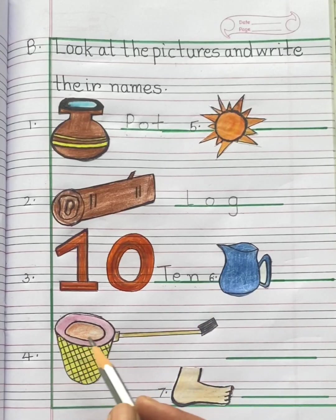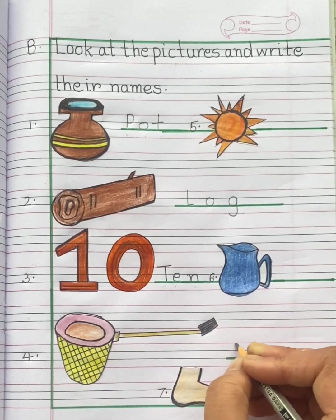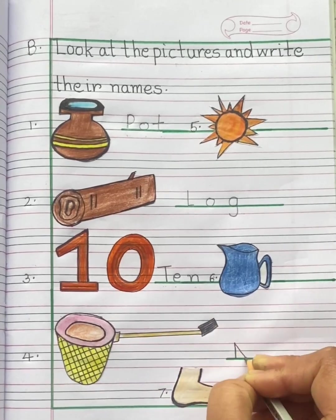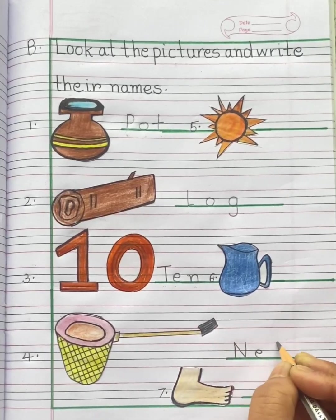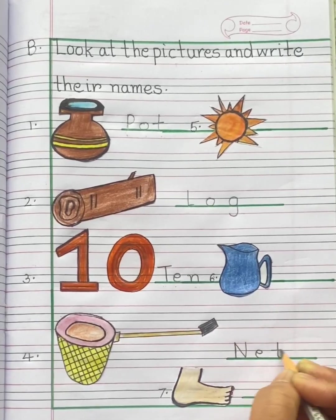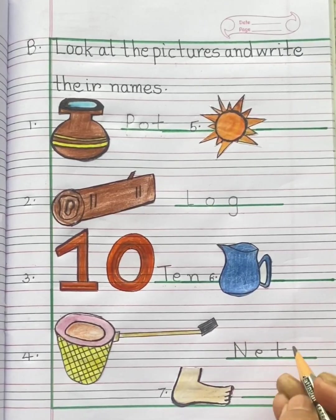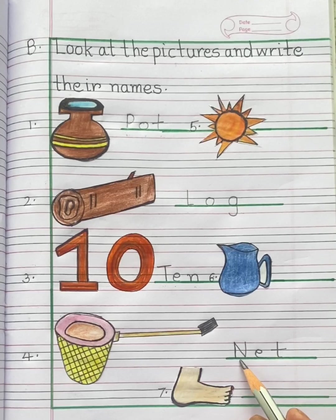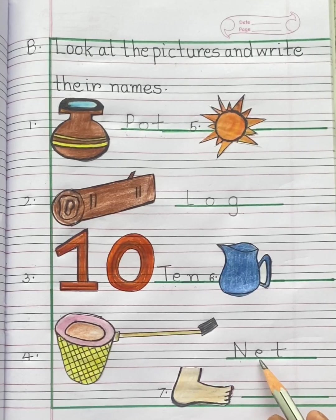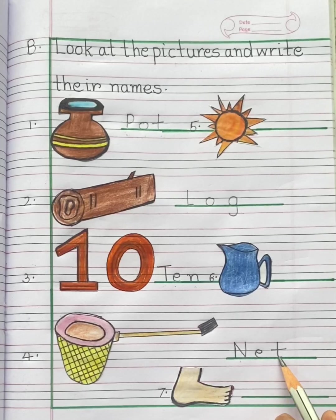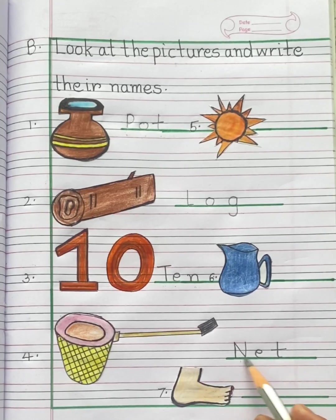This is net. N-E-T. Net. Beginning sound is N. Middle sound is E. Ending sound is T. N-E-T. Net.